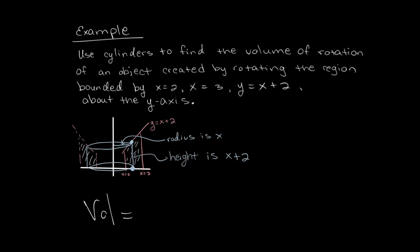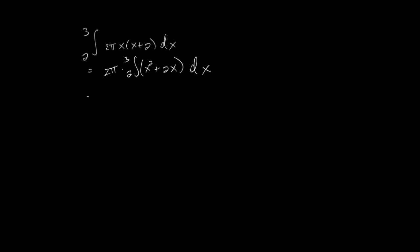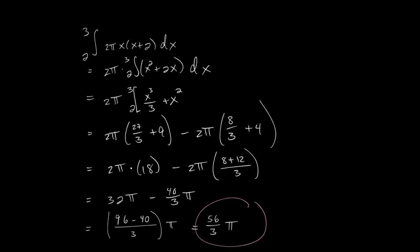So the volume that we're looking for here is the integral from 2 to 3 of the surface area of a cylinder, which is 2π times the radius, which is x, and also times the height, which is x plus 2. So we've got our radius and our height. Bringing the 2π out in front and foiling. Now taking the anti-derivative and plugging in and subtracting. Simplifying these numbers. Our final answer is 56π over 3, giving us the volume of the figure on the previous slide.